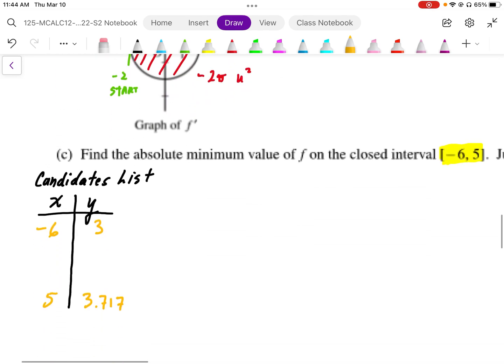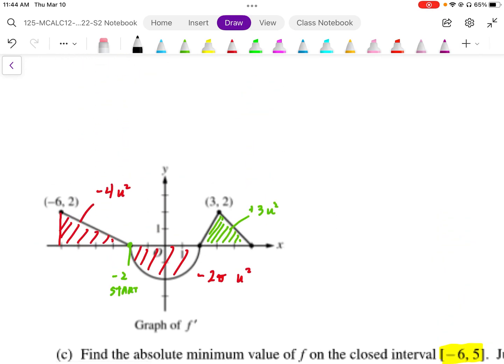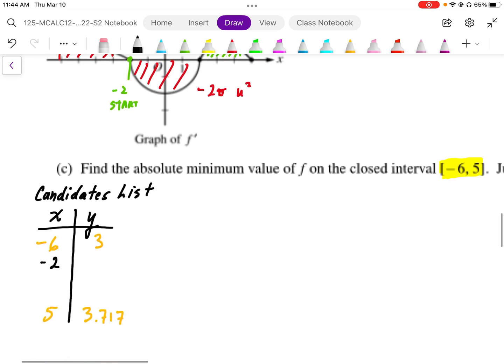So putting those in, I'm going to have negative 2. So to calculate the y-coordinate at negative 2, that's just going to be the starting point, which we were given as positive 7, which was defined.